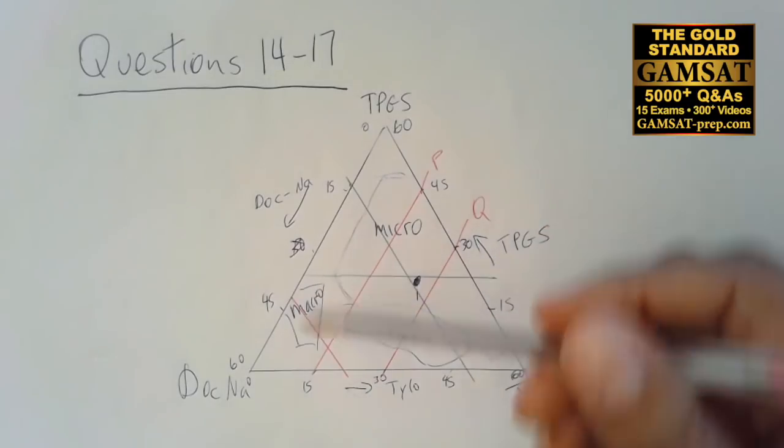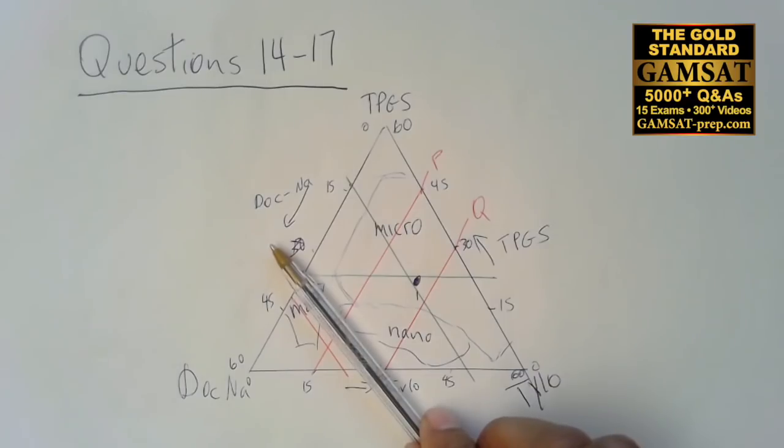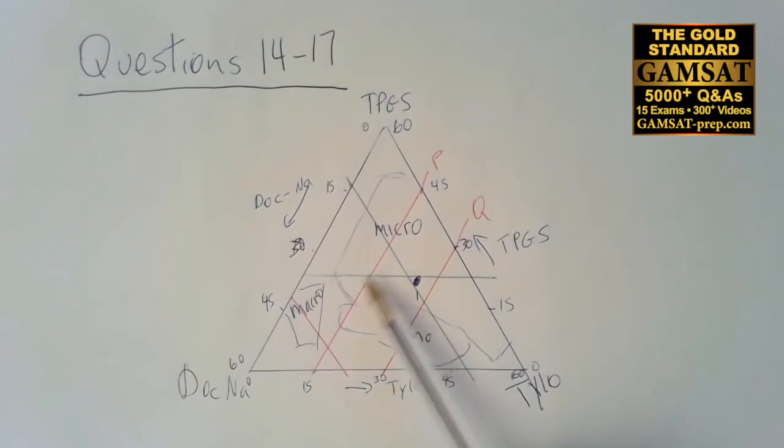I probably drew it too high a little bit but anyway so if I'm looking for formulation containing at least 40% DOCNA it can only be, well look even if I drew it a little bit lower down like this or something like that just a little bit lower down it's macro and nothing else. There's no nano there's no micro, 40% DOCNA is macro and so 16 is certainly B.